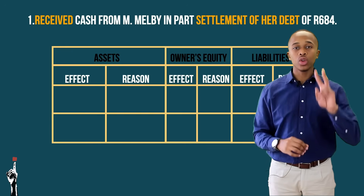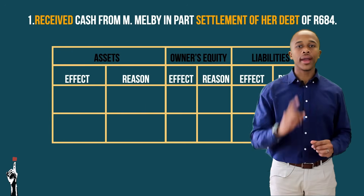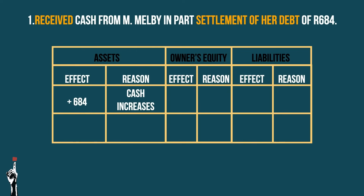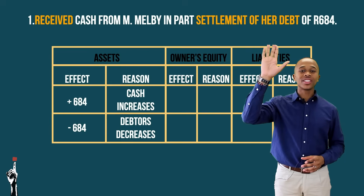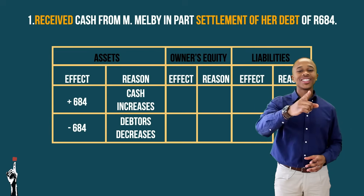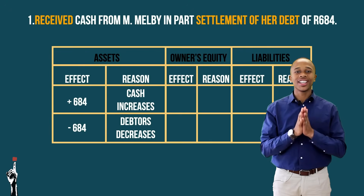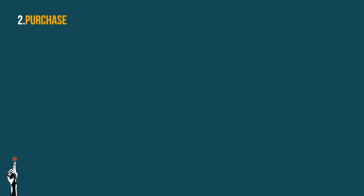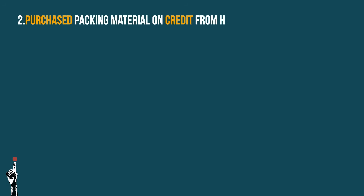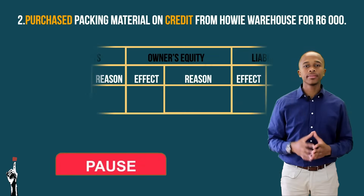Answer in three, two, one. Your cash will increase as a debtor settles their debt, and your debtors control will decrease as they no longer owe the business money. Raise your hands if you got the correct answer — well done. Transaction two: purchased packing material on credit from Howie Warehouse for R6,000. Pause button.